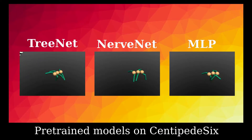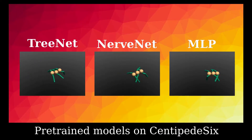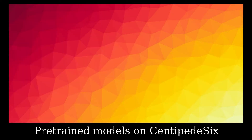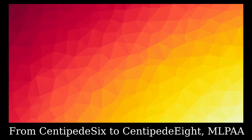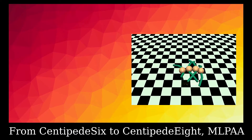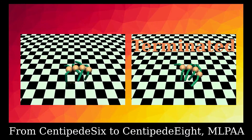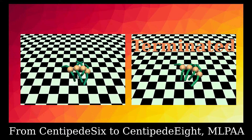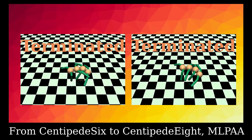All models could be used to train a pretty good policy on the original task. In MLPAA (MLP Activation Assign), we assign the activation so that the agents remember how to control old body parts.